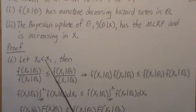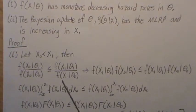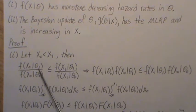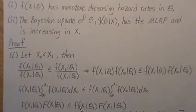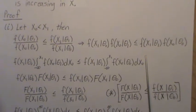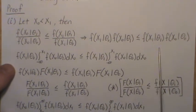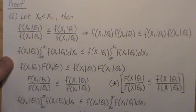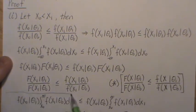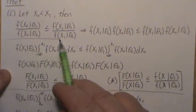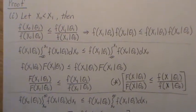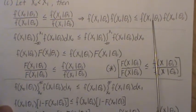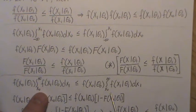Let's prove the first one. Because f has the monotone likelihood ratio property, the ratio f(x_1 | theta_1) / f(x_1 | theta_0) is increasing in x, and since x_1 is greater than x_0, this ratio must be bigger. Multiplying through gives us an inequality, and then we integrate both sides.